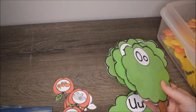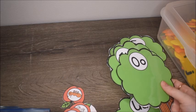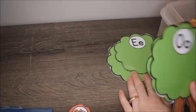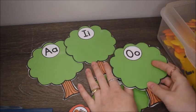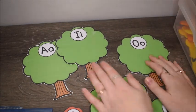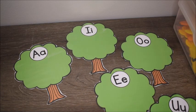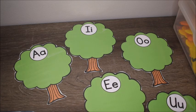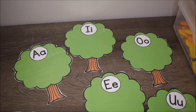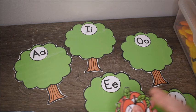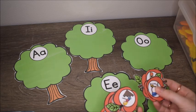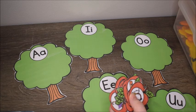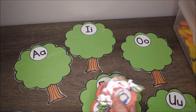The kids are going to match up the apples to the correct apple tree — we have A, E, I, O, and U. I gave each student a tree. If you're working with just one student, you might want to give them one tree at a time, or you can lay out all the trees and have a little forest. I laid the apples out in a pocket chart and then they had to match up the correct one.